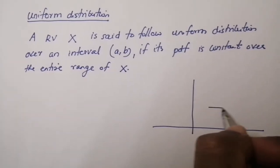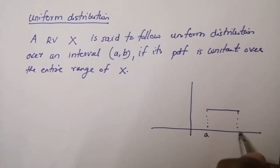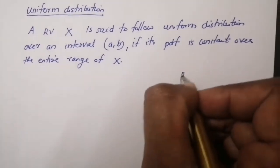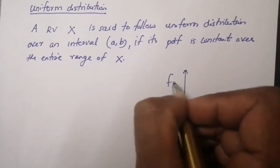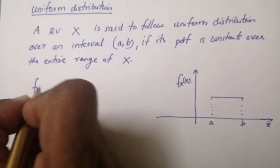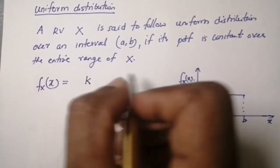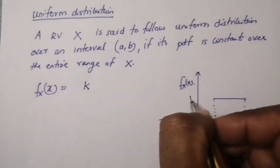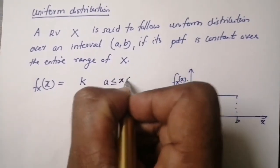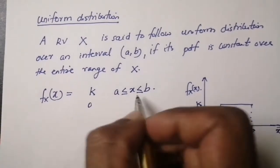Assume that the random variable X is uniform in the range of a to b. So the PDF f_X(x) equals k in the range a ≤ x ≤ b, and zero elsewhere.